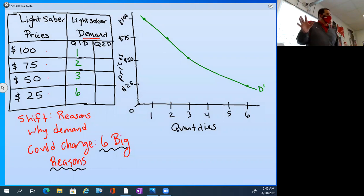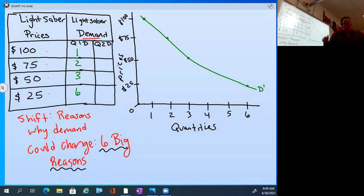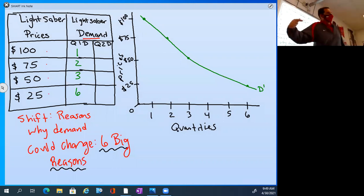Desire, willingness, and ability. So, I use this example with you yesterday, the million dollar house. You might desire to live in a million dollar house. You might be willing to pay for a million dollar house, but do you have the ability? No. So demand is going to be zero for that house because you don't meet all three factors for demand to exist.